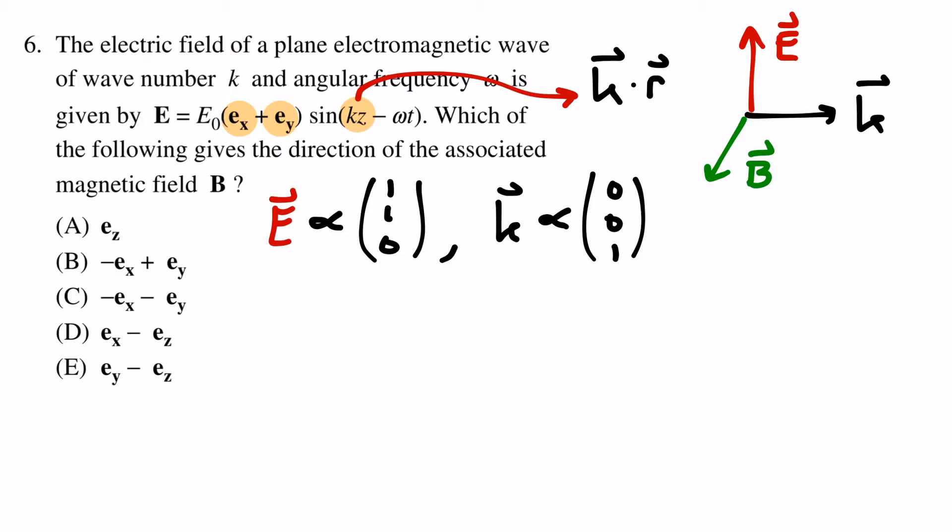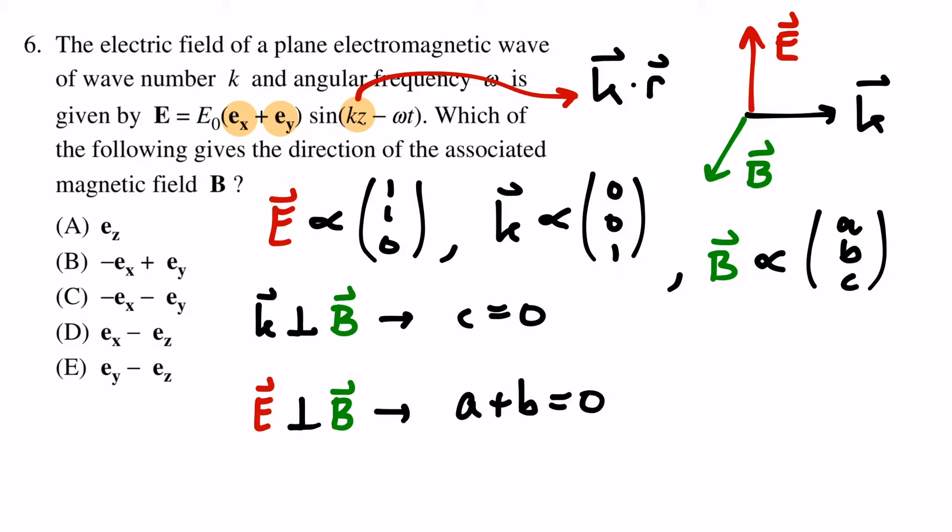We now have to find a direction that is orthogonal to both and. If we call this direction of the magnetic field ABC, then we immediately see that c has to equal zero, and that a has to be negative b. So we have to look for an answer that has no ez and where ex and ey have opposite sign.